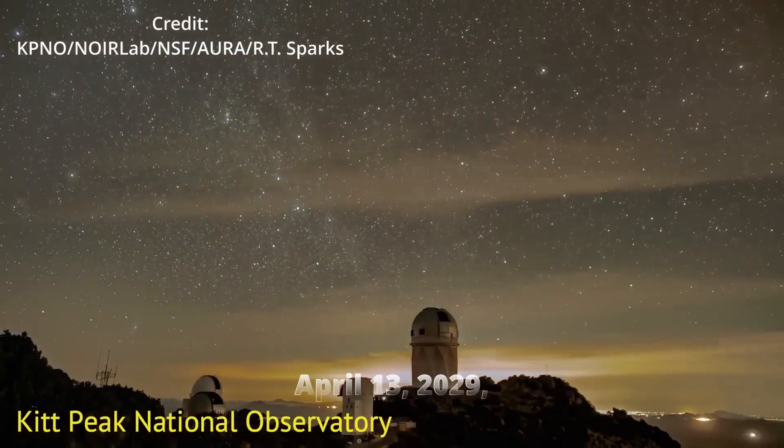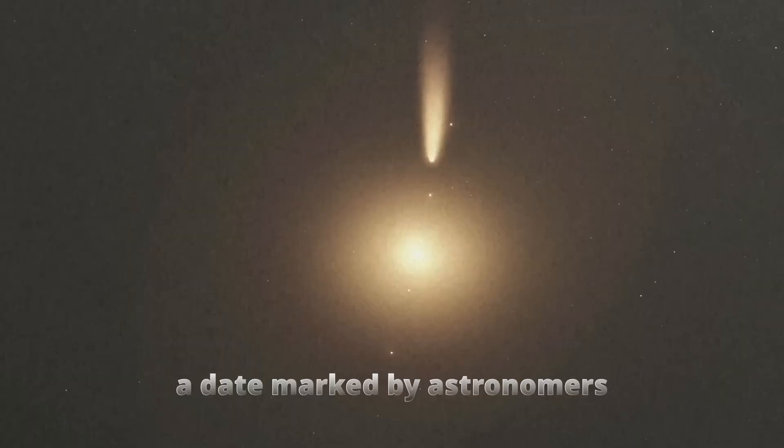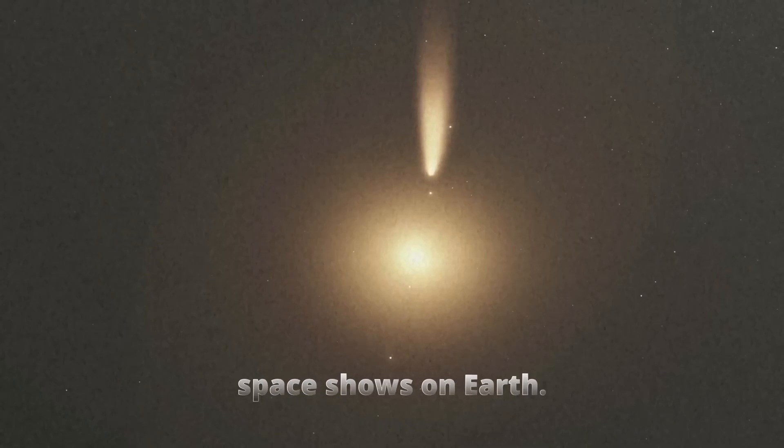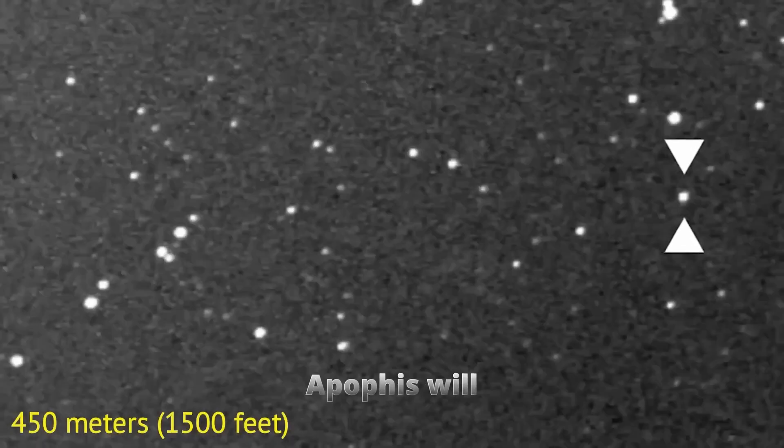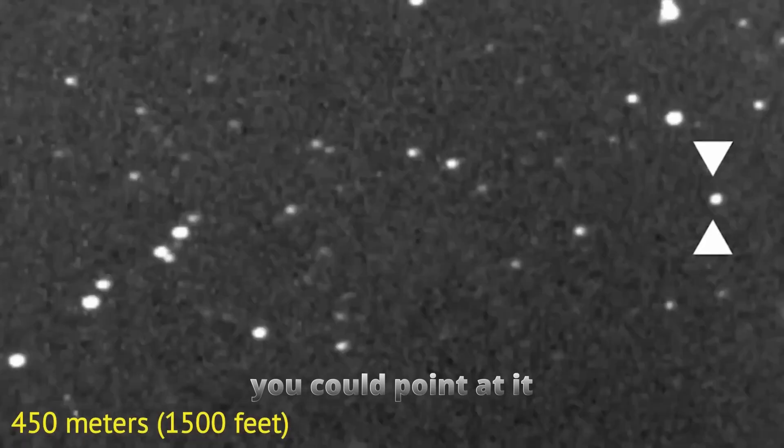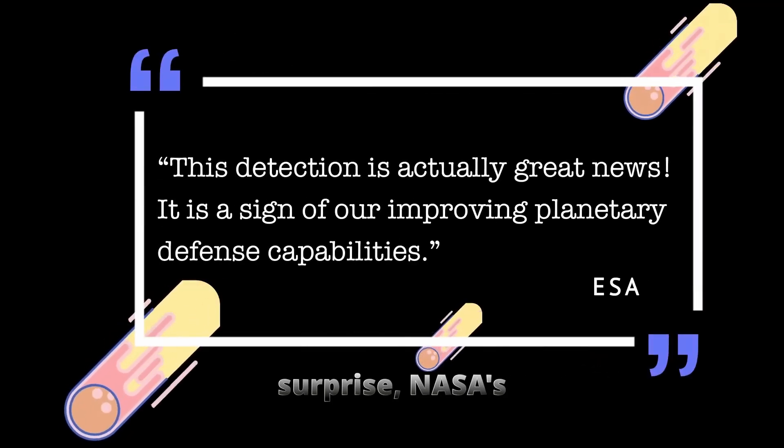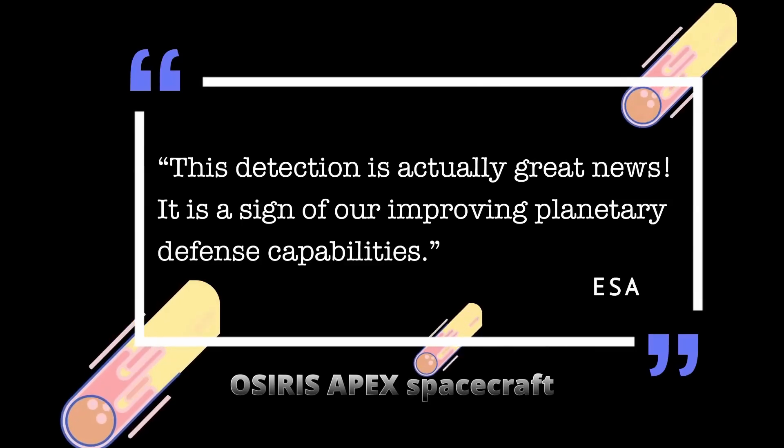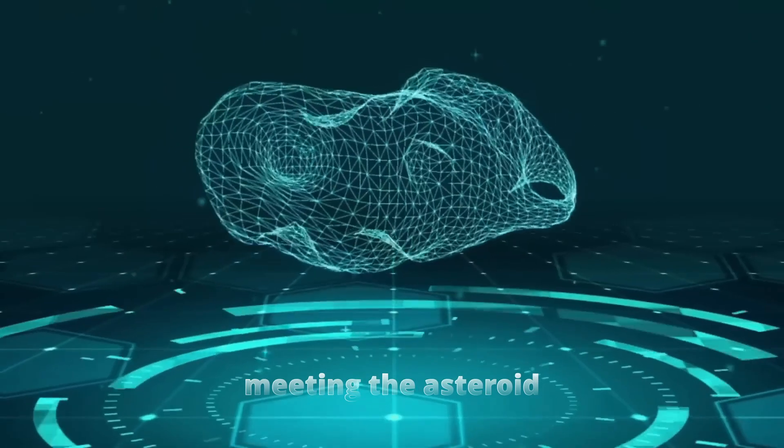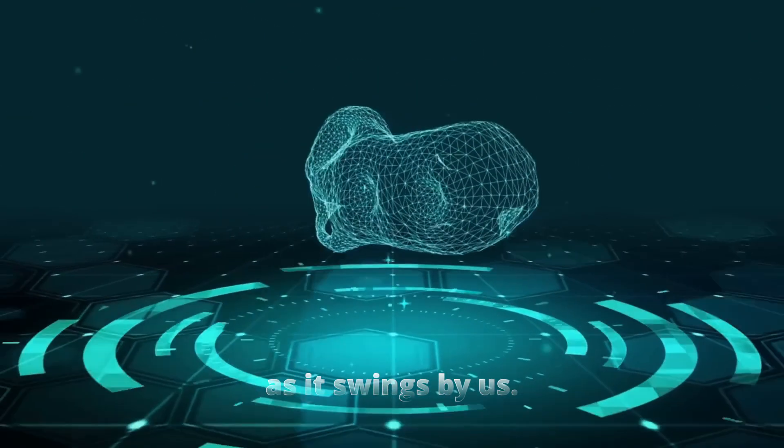April 13, 2029. A date marked by astronomers not for destruction, but for one of the greatest live space shows on Earth. Apophis will be so close you could point at it from your backyard. But here's the bigger surprise. NASA's OSIRIS-APEX spacecraft will be there too, meeting the asteroid as it swings by us.